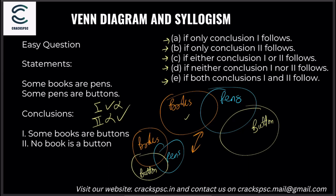If only conclusion one follows — no. Only conclusion two follows — definitely no. Either conclusion one or two follows — think about it: it's this situation or it's this situation, right? If neither conclusion follows — no. If both conclusions follow — no, because some books are buttons and no book is a button can't both be true. So C — either one or two follows — is the correct answer.